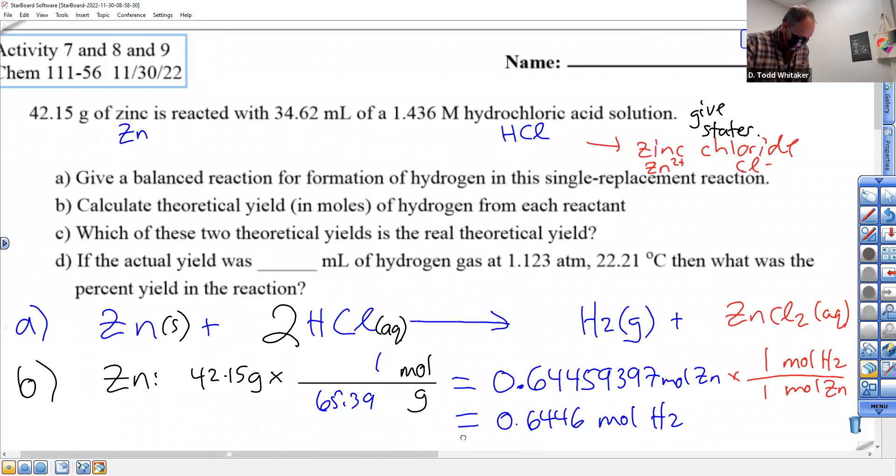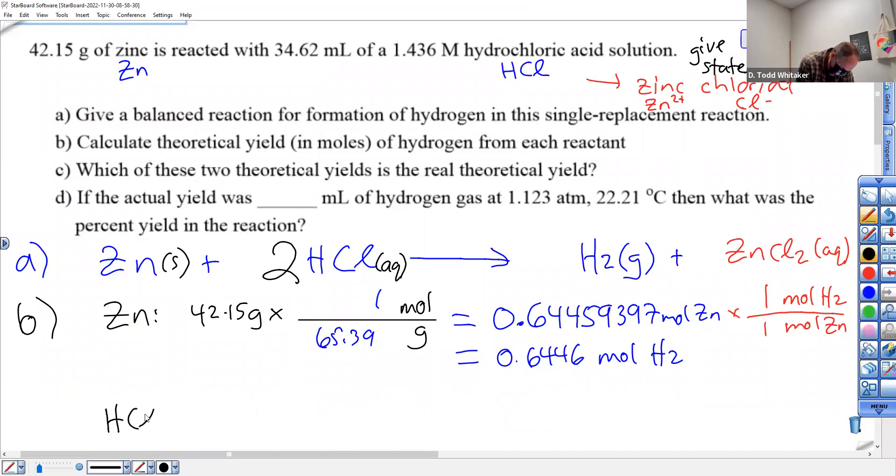So, there we go. That's zinc. Now, we got to do HCl. Same deal. You have the information to go to moles, but you got to show me you know that you can't use moles per liter unless you have liters. One liter for every 1,000 milliliters, 0.03462 liters times 1.436 moles per liter.